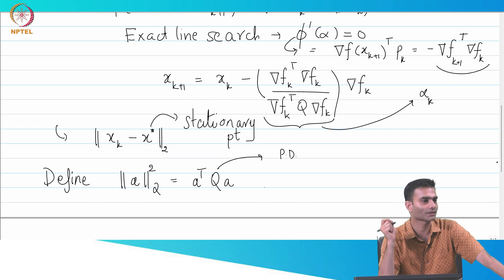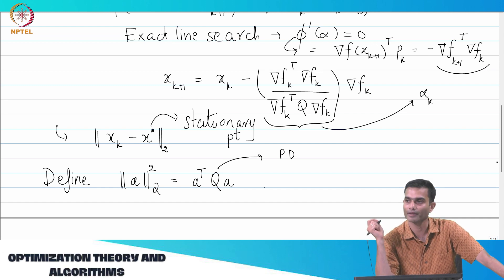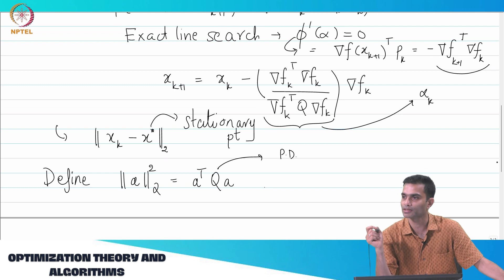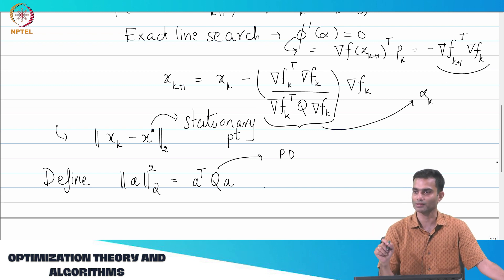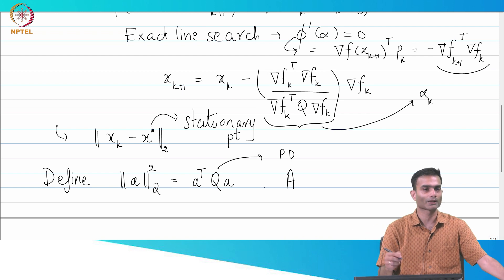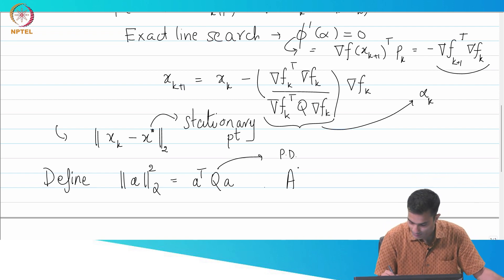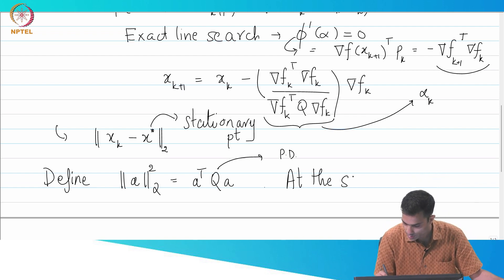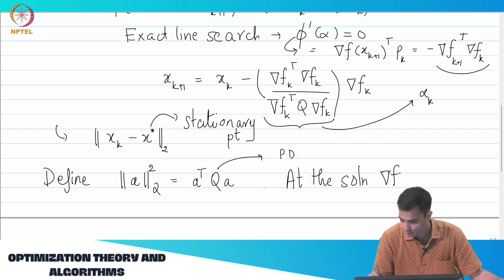Grad f of x star should be 0, right? We studied this in the beginning - the signature of a stationary point is its gradient is 0. So let's keep a note, we should always know where we are heading, otherwise it just looks like random math. So at the solution, grad f of x star is equal to 0.